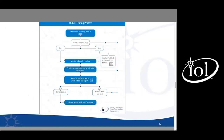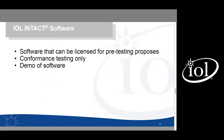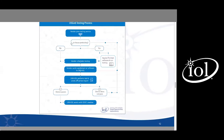Now we'll jump into the testing process and how we get from test plans and capabilities and requirements to the end result of a report and S-Docs. The first step is to join a testing service — we have a slide later to talk about the different options. We also offer software that allows you to pre-test for the program. Right now we'll take a pause and have a demo of the software we offer to help you pre-test for USGv6 and Ready Logo.